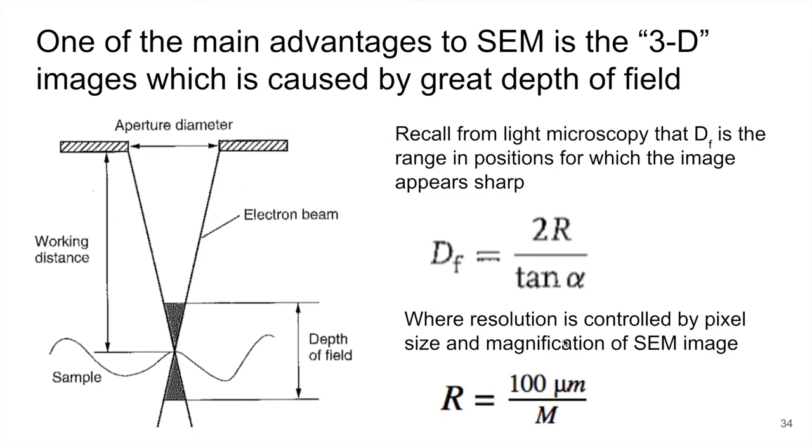We also just talked in the last module about how the pixel size controls the resolution because we have a minimum pixel size of a hundred microns. So we can relate the resolution and the pixel size to the magnification with this expression that we also used in the light microscopy chapter.